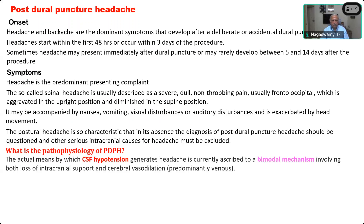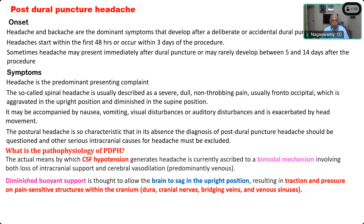Now, what is the pathophysiology? It is CSF hypotension, which generates a headache. It has been described as a bimodal mechanism involving loss of intracranial support and cerebral vasodilatation, especially of the venous channels. Loss of intracranial support causes stretching of the meninges, and vasodilatation of the venous channels explains the non-throbbing nature — if it were arterial, you would have a throbbing headache. The diminished buoyant support allows the brain to sag in the upright position, causing traction and pressure on pain-sensitive structures: dura, cranial nerves, bridging veins, and venous sinuses.